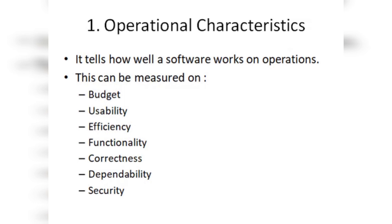Efficiency means the functions perform properly and timely — that is efficiency. Next is functionality: if you have incorporated 5 functions and all 5 functions work without any fault, then this means the operational characteristics are satisfied.